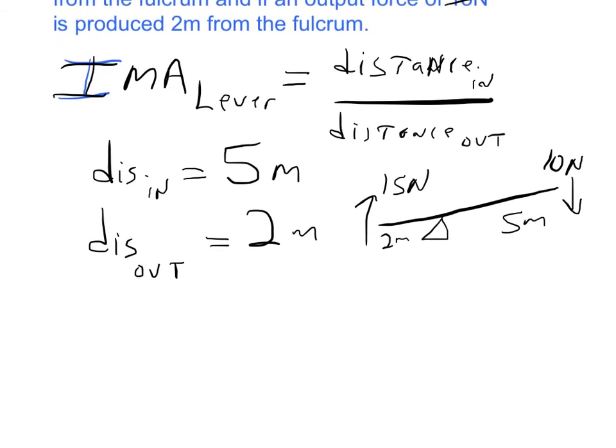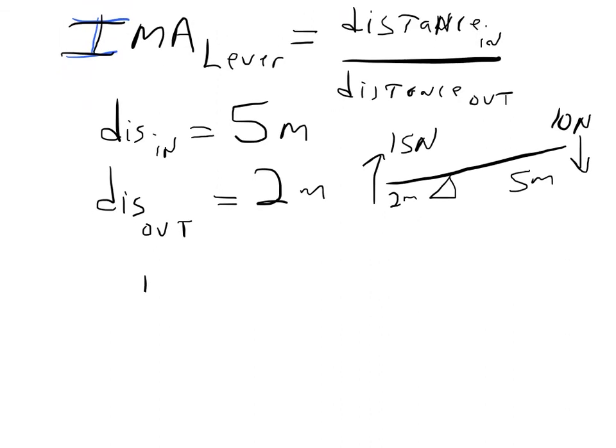Let's calculate the IMA. It's pretty straightforward. IMA equals that distance in, which is 5 meters, divided by the distance out, 2 meters. There's no units for ideal mechanical advantage because the units cancel out. And 5 divided by 2 is 2.5.